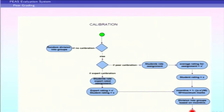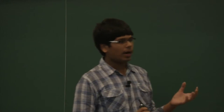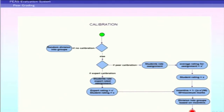In expert calibration, the instructor gives an assignment with rubrics and also provides a model answer with a grade. Each student calibrates against this, and when their scores match the instructor's score, they receive an incentive score representing their internal capability as a grader. In peer calibration, the comparison is done between your score and the mean average score of your peers. This ensures that the first time a student enrolls we can build a user profile and use that data to perform the evaluation strategy effectively.